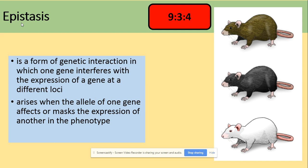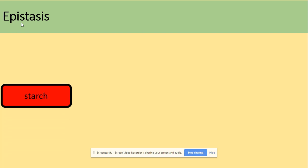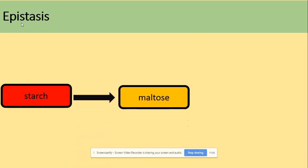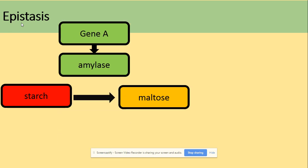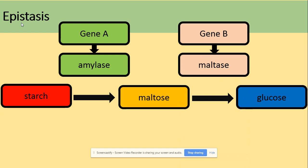It looks quite complicated, but it's not. We're going to look at epistasis using an equation that everyone is aware of — the hydrolysis of starch. The starch is hydrolyzed to maltose by the enzyme amylase, and we will use gene A which codes for this amylase. Then maltose is hydrolyzed by maltase to glucose, and let's say maltase is coded for by gene B.